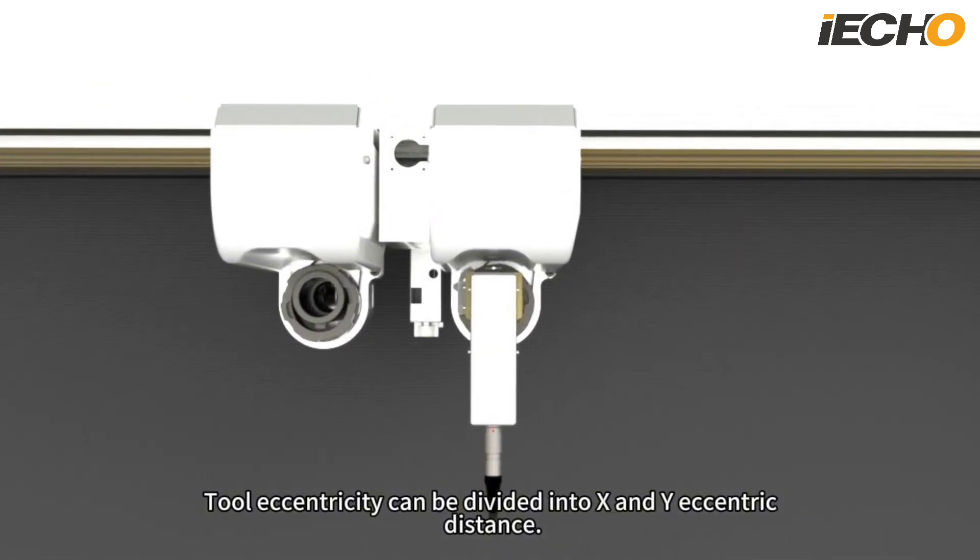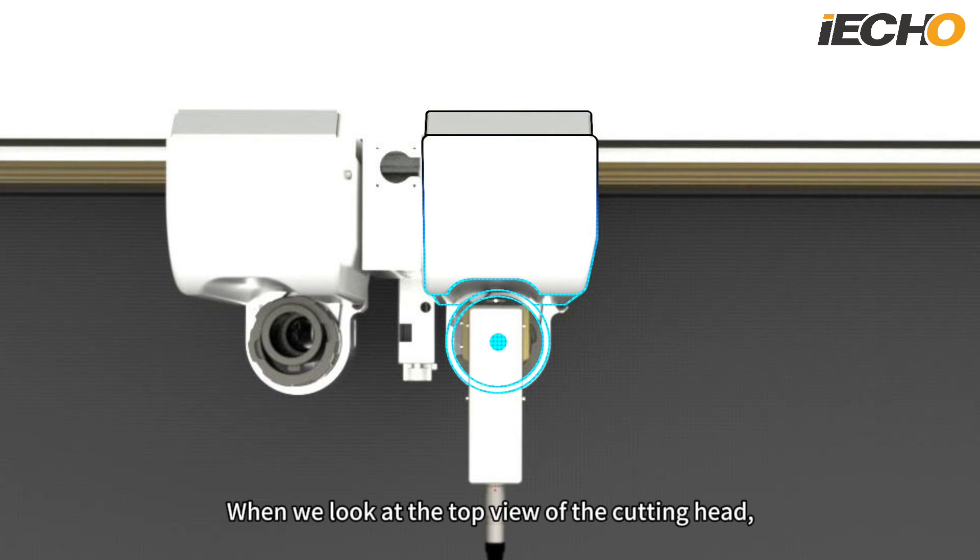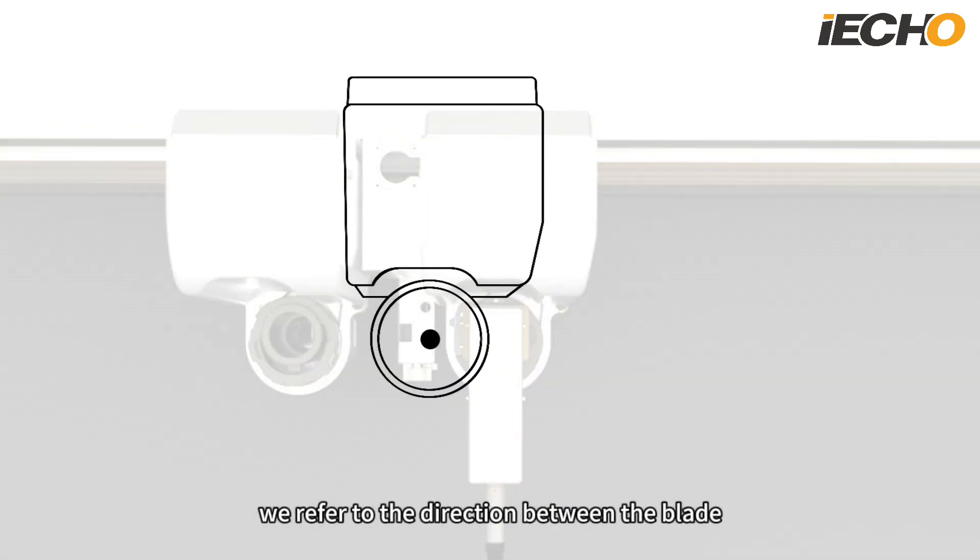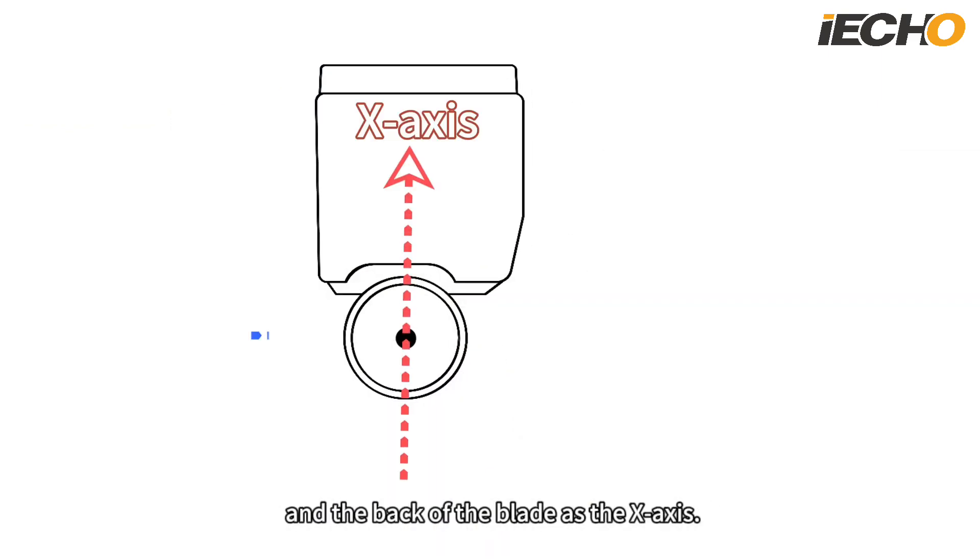Tool eccentricity can be divided into X and Y-eccentric distance. When we look at the top view of the cutting head, we refer to the direction between the blade and the back of the blade as the X-axis. The side direction of the blade is Y-axis.